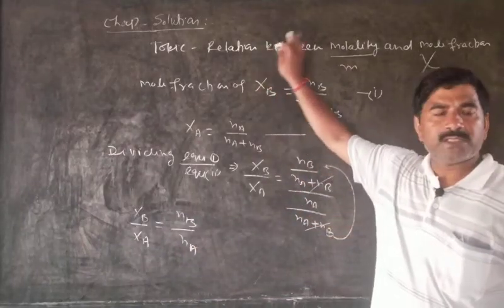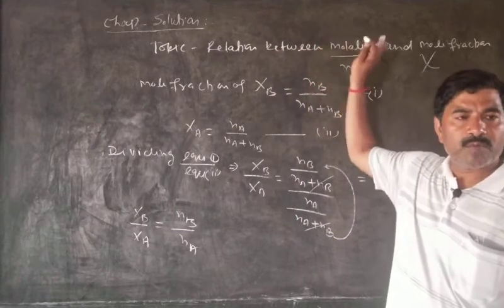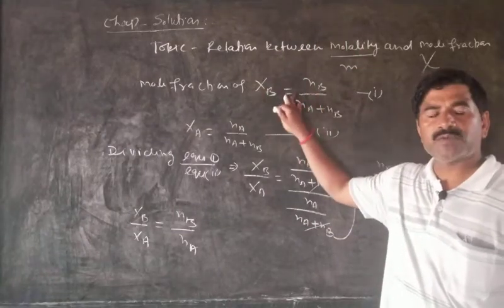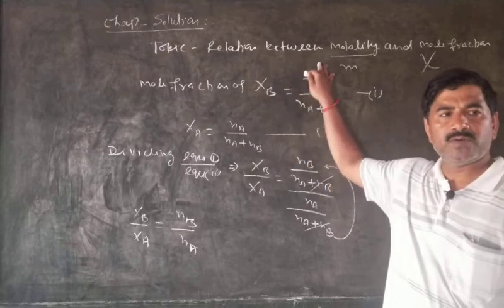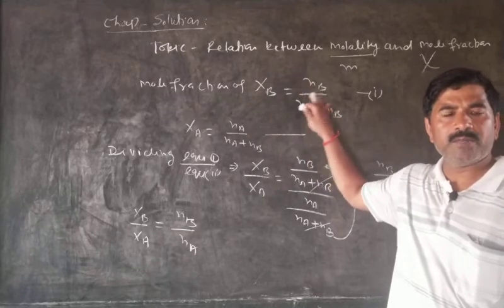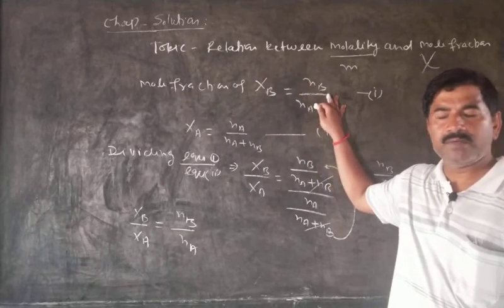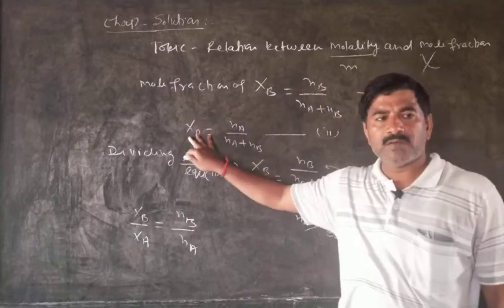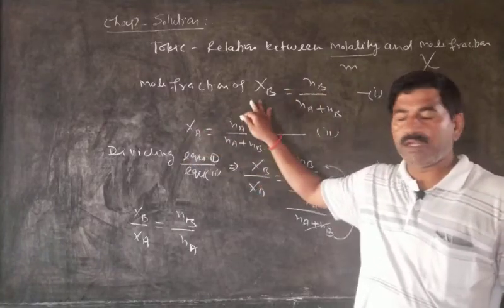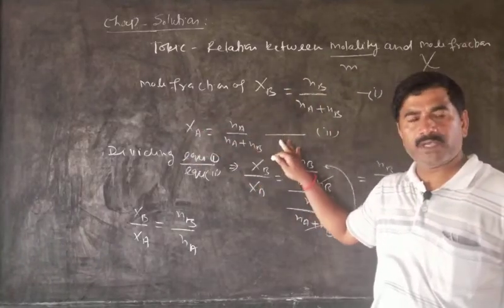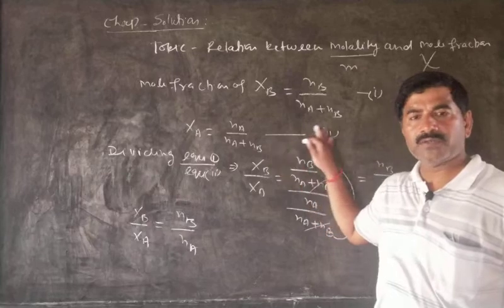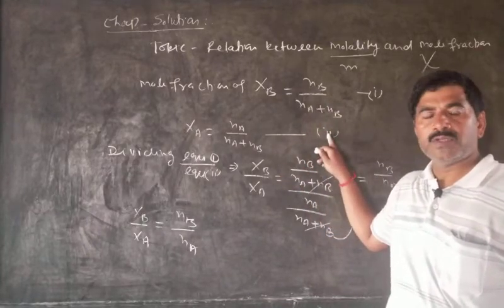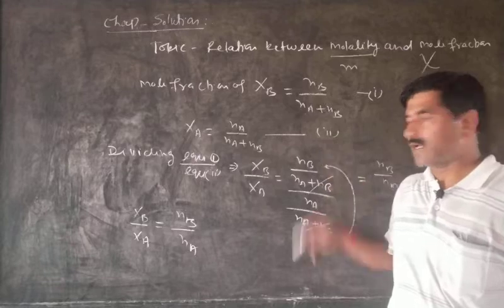We will prove the relation between molality and mole fraction. Since we know that mole fraction of solute xB is equal to nB upon (nA + nB) — equation 1, and mole fraction of solvent xA is equal to nA upon (nA + nB) — equation 2. Dividing equation 1 by equation 2, we obtain xB upon xA is equal to nB upon nA.